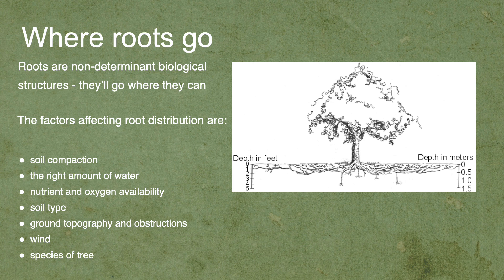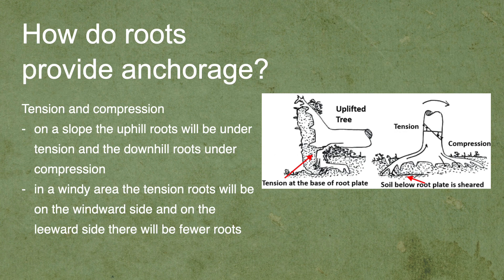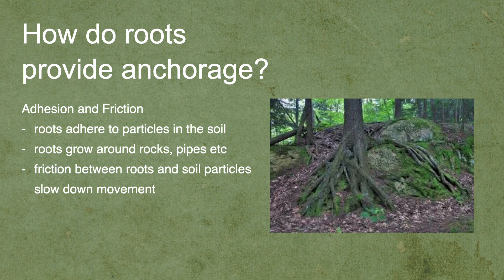Roots will also be affected by wind. Where there's a lot of wind, there will be more roots on one side to keep the tree upright. It's also worth thinking about the species of tree — some are remarkably deep-rooted or have extensive roots, whereas others don't. When thinking about roots providing anchorage on a slope, the uphill roots will be under tension and the downhill roots under compression, with more roots in the right place to keep the tree stable. In a windy area, similarly, there'll be more roots on the windward side and fewer on the leeward side.